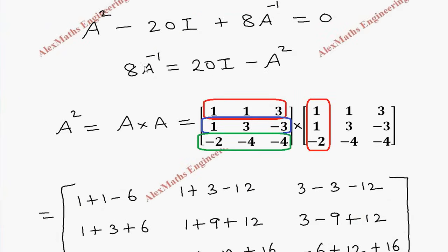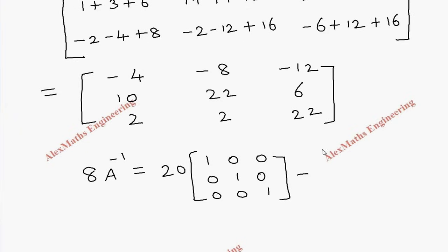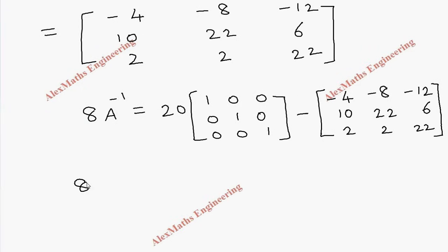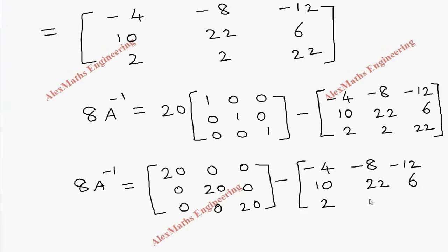Now substituting into the expression: 8A inverse equals 20I minus A squared. So 20 times the identity matrix gives the diagonal matrix with 20, 20, 20, minus the A squared matrix with entries minus 4, minus 8, minus 12; 10, 22, 6; 2, 2, 22.